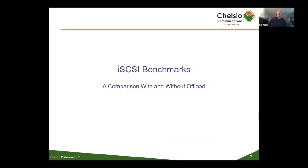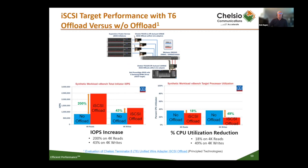I want to get into some benchmarks. I'll show some iSCSI benchmarks and then some NVMe over Fabrics and NVMe over TCP benchmarks. First, the iSCSI benchmark. This is a paper we did with DeMarTech, now Principal Technology. What this illustrates are some of the IOPS benefits from doing offload, as well as the CPU utilization reduction. The CPU utilization reduction is 18% for 4K reads, and for 4K writes it's almost 50%. But that's with an increase of load - 200% on the reads and 43% on the writes. So you're getting more work done with less CPU. Chelsea has shined in iSCSI - we very much dominate this market and we do it very efficiently.